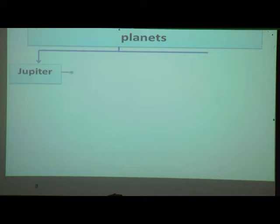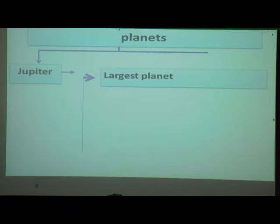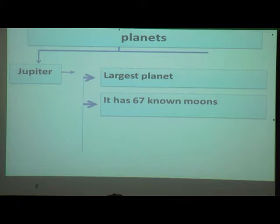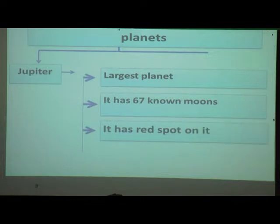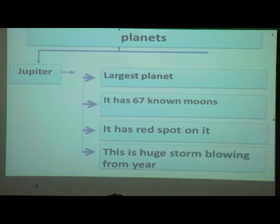Now we will see about Jupiter. It is the largest planet in the solar system. It has 67 known moons. It has a red spot on it, which is due to a huge storm blowing on the planet.